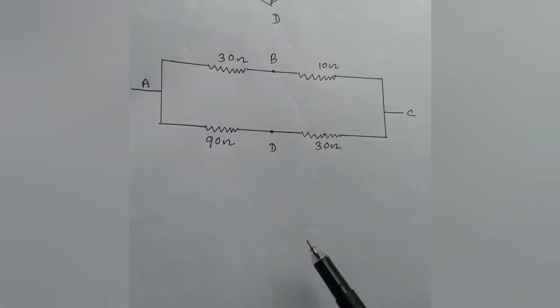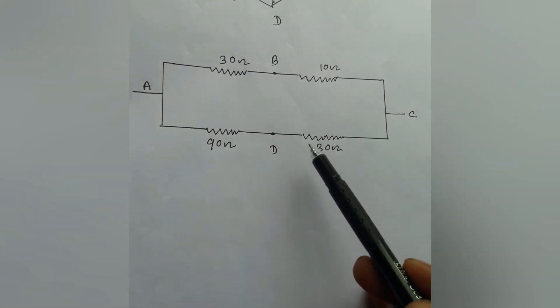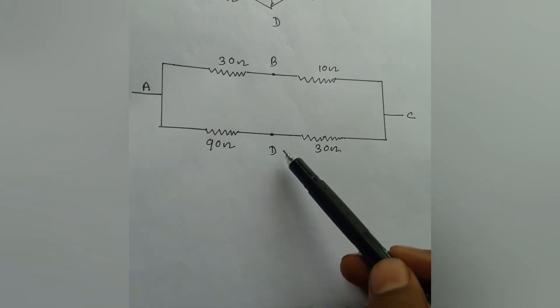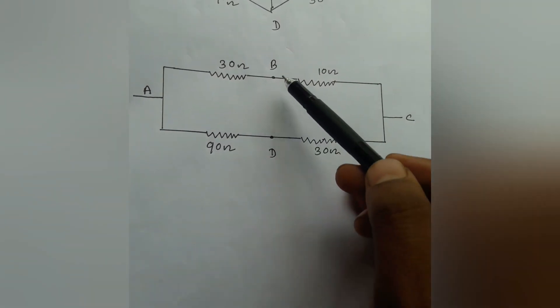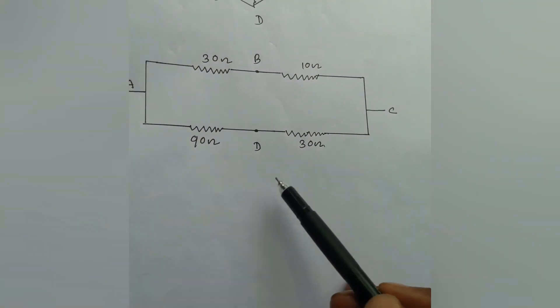Now the equivalent circuit is like that where we have omitted the 10 Ohm resistance from B and D. And this is a very simple circuit.